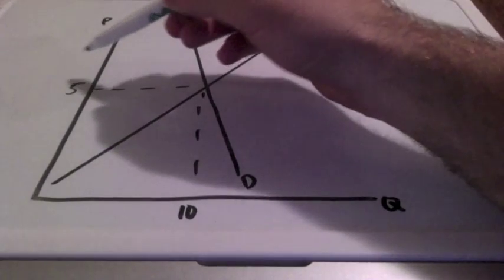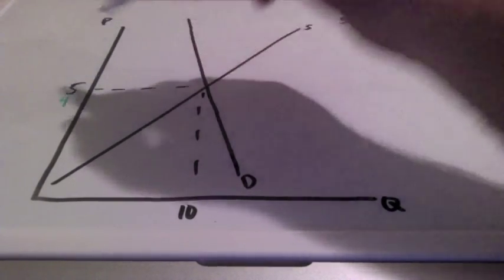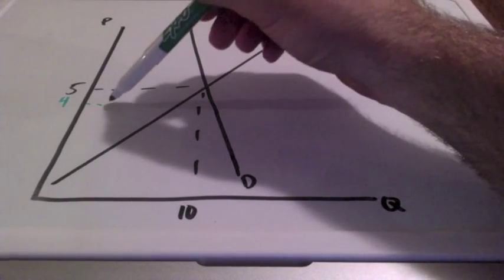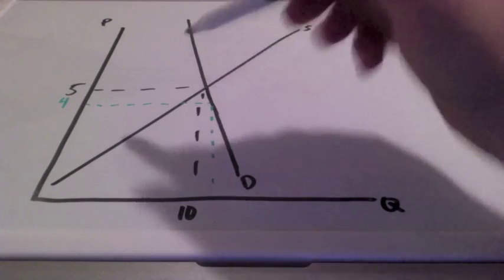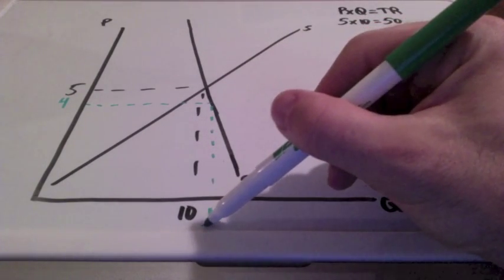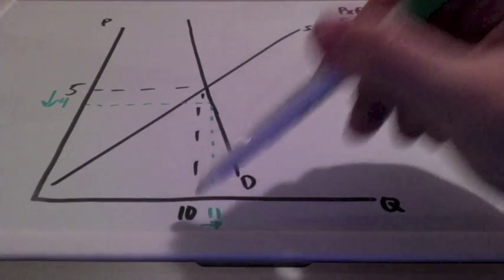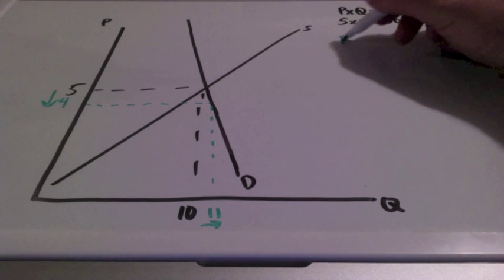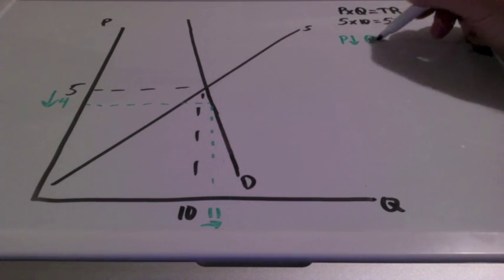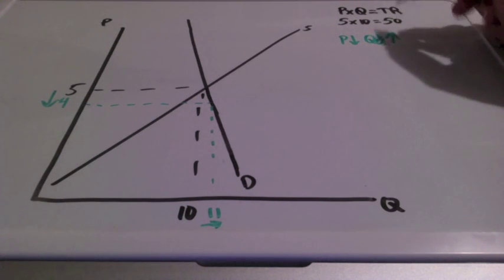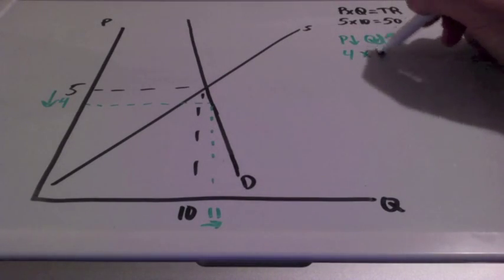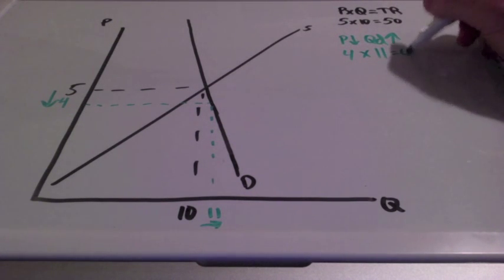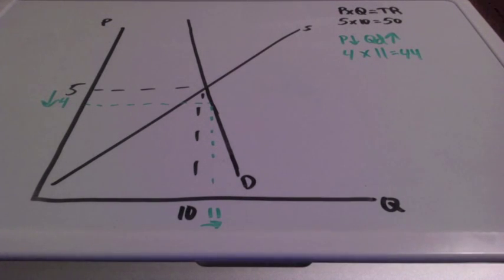Let's say prices go down from 5 to 4, and our quantity demanded increases from 10 to 11 units. The law of demand says when prices go down, quantity demanded will increase. Let's take a look at total revenue: 4 times 11 equals 44. So our total revenue actually decreased from our starting point of 50.